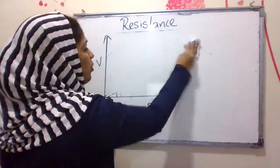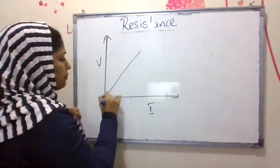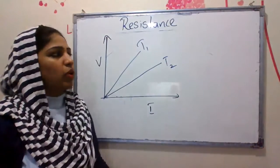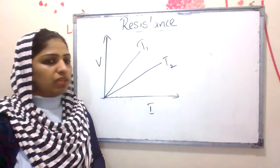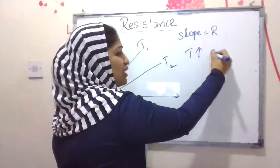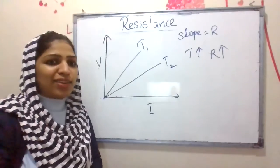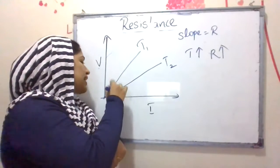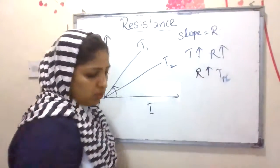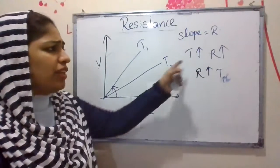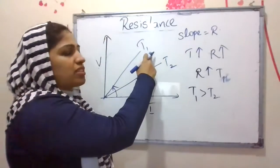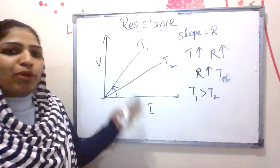For temperature-based graph questions: we have two V-I graphs at temperatures T1 and T2. The slope of the V-I graph equals resistance, and when temperature increases, resistance increases. So the graph with more slope corresponds to higher temperature. From the diagram, the slope at T1 is greater, which means T1 is greater than T2.